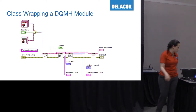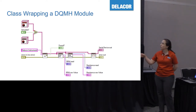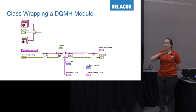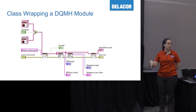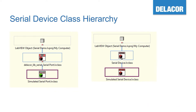The class wrapping a DQMH module: in the previous example, the classes were completely hidden from the developer at the high level — they were creating tests directly as DQMH modules. Here, the OO is front and center and we just happen to use the DQMH module as a quick way to have a simulated panel. It's not going to work for every team, but it might work for several of you.